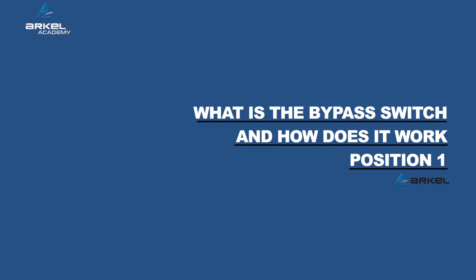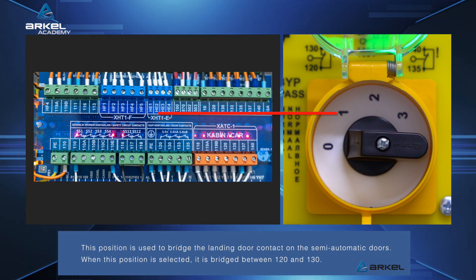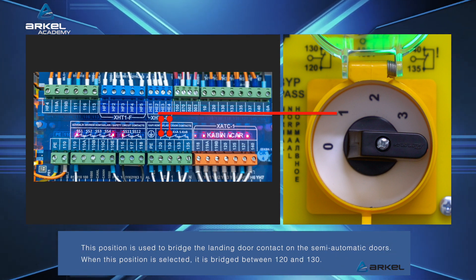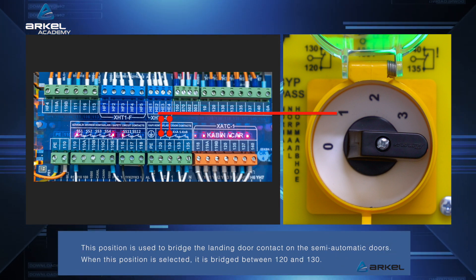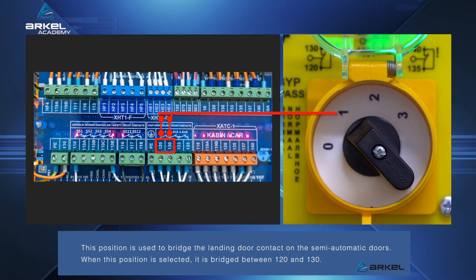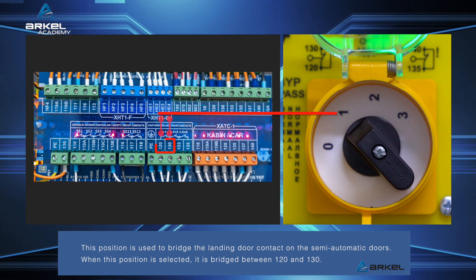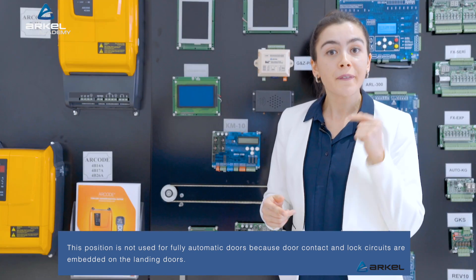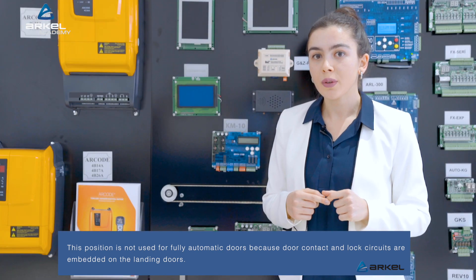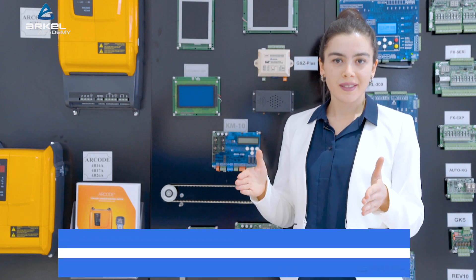Position 1: this position is used to bridge the landing door contact on the semi-automatic doors. When this position is selected, it is bridged between 120 and 130. This position is not used for fully automatic doors because door contact and lock circuits are embedded on the landing doors.